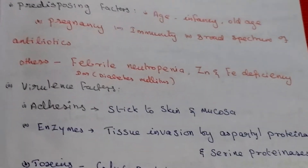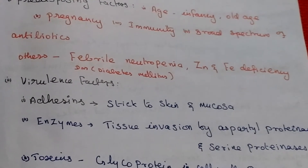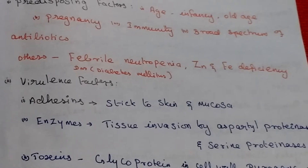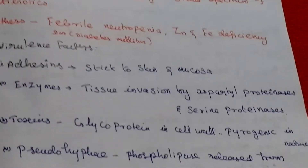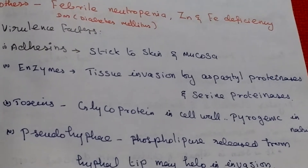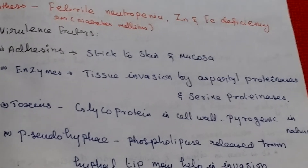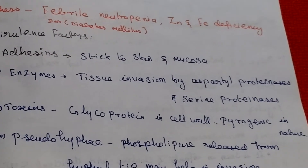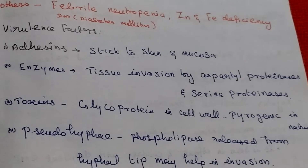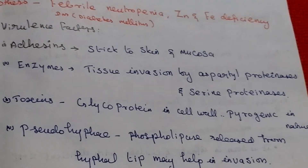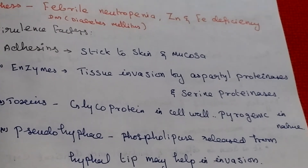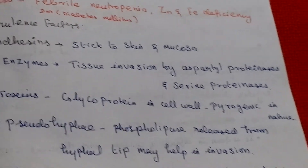Then virulence factors. First is adhesion — it sticks to skin and mucosa. Second is enzymes: tissue invasion by aspartyl proteinase and serine proteinase. Then toxins and glycoproteins, which are pyrogenic in nature.